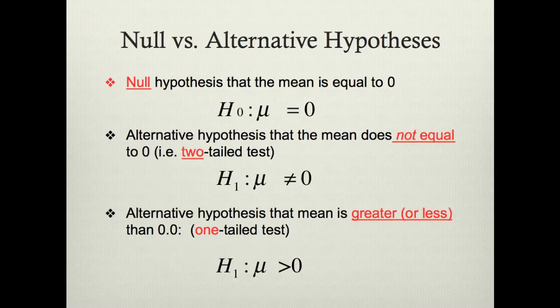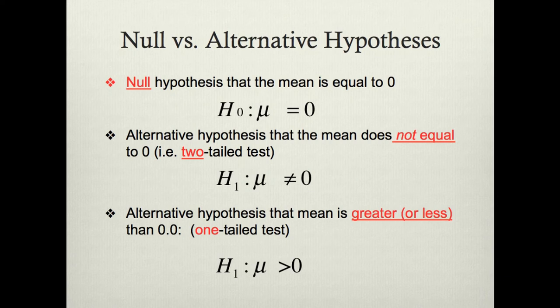A hypothesis establishes a rule to decide whether the null hypothesis should be rejected — for example, that there is no difference in the height of men and women. The null hypothesis, H-sub-0, always suggests that there will be no effect in the population. The alternative hypothesis, H-sub-A or H-sub-1, is an alternative to the null and claims that there is an effect in the population.